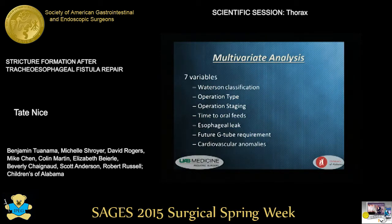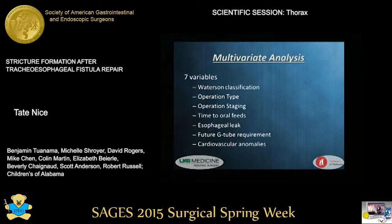Due to sample size, seven variables were then selected for the multivariate analysis. These included the Watterson classification, the operation type, the operation staging, the time to oral feeds, esophageal leak, future gastrostomy tube requirement, and a cardiovascular anomaly. TEF type was not included because of the small numbers of the less common types. Variables were then sequentially removed until all variables were significant.